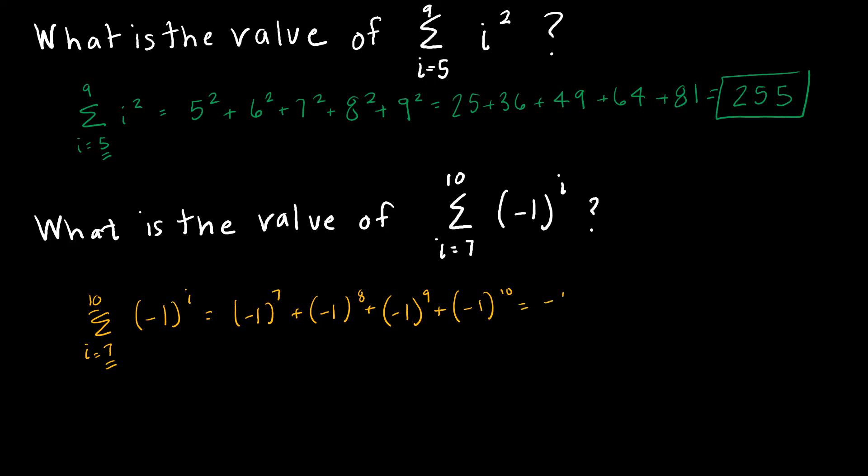Negative 1 to the 7th is negative 1. Negative 1 to the 8th is positive 1. I add those together and I get 0.